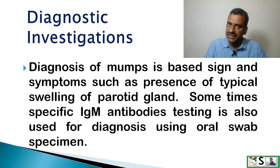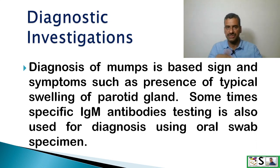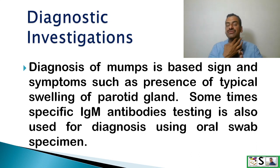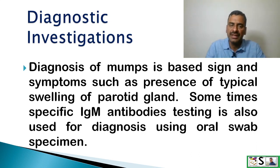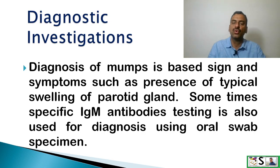What are the diagnostic investigations? The first and foremost important diagnostic feature is signs and symptoms — just watching the patient and taking history can indicate mumps. Sometimes IgM antibody testing is also done using an oral swab specimen.